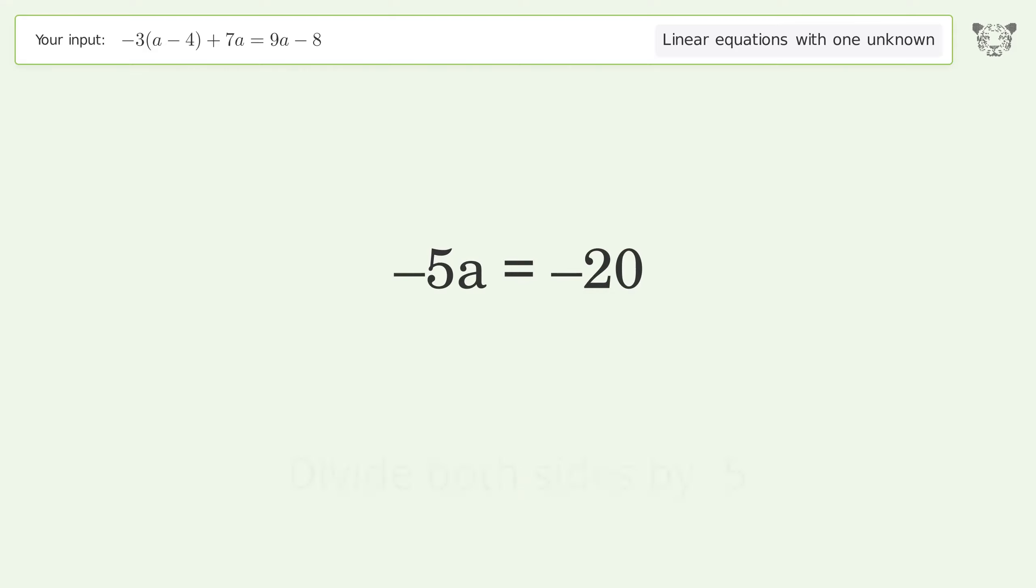Isolate the a. Divide both sides by negative 5. Cancel out the negatives. Simplify the fraction.